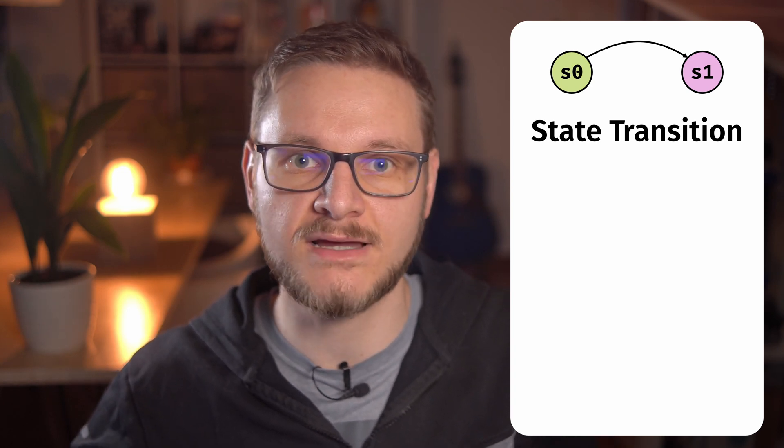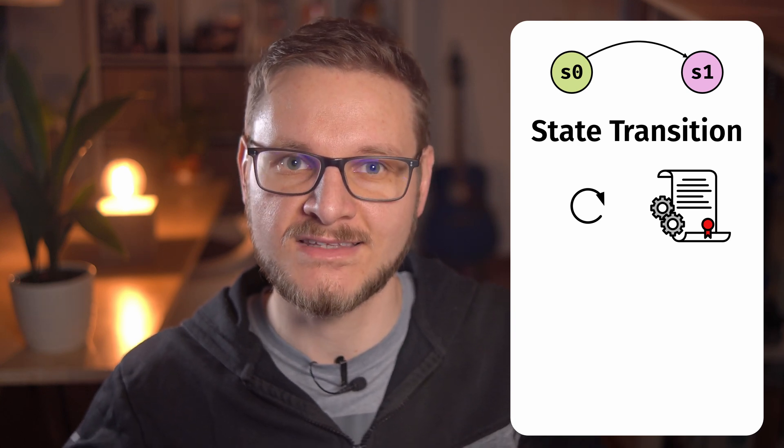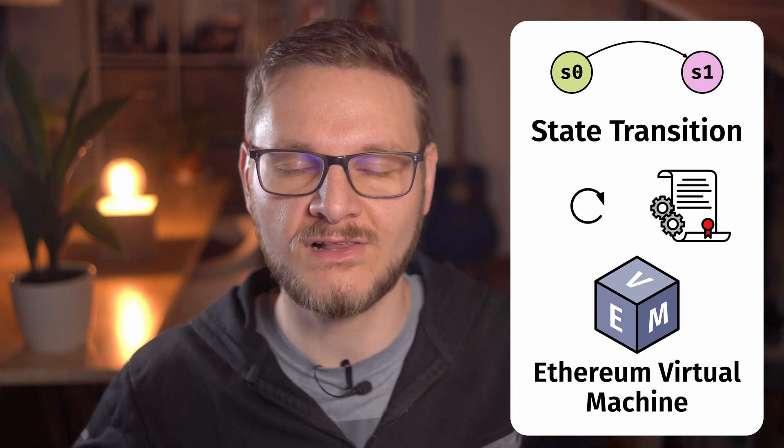All those key-value pairs represent the global state of the Ethereum blockchain. A state transition to a new global state — adding, removing or changing a key-value pair — is not done by transactions but by running code, so-called smart contracts. The smart contract code is executed on the Ethereum Virtual Machine, which we will call EVM from now on.